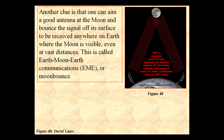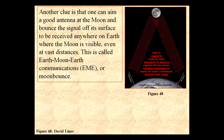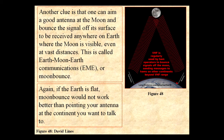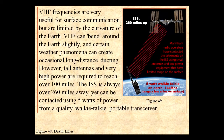Another clue is that one can aim a good antenna at the moon and bounce the signal off its surface to be received anywhere on earth where the moon is visible, even at vast distances. This is called earth-moon-earth communications — EME, or moon bounce. If the earth were flat, moon bounce would not work better than simply pointing an antenna at the continent you want to talk to. This confirms the sphericity of the earth.